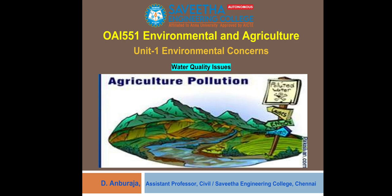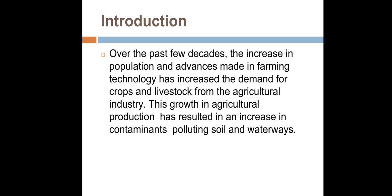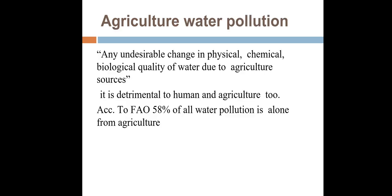We are going to discuss water quality issues under the subject of environmental and agriculture, unit 1. Over the past few decades, the increase in population and advances made in farming technology has increased the demand for crop and livestock from the agriculture industry. This growth in agriculture production has resulted in an increase in contaminants polluting soil and waterways. Agriculture water pollution refers to any undesirable change in the physical, chemical, or biological quality of water due to agriculture sources, and it is detrimental to both humans and agriculture.